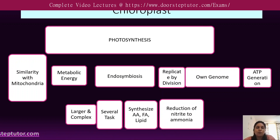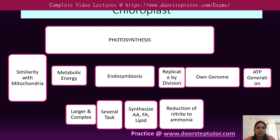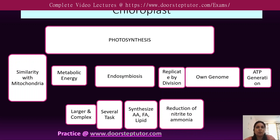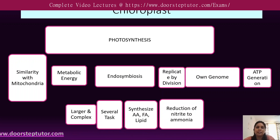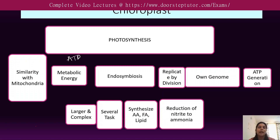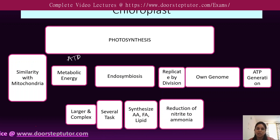Photosynthesis is the synthesis of carbon compounds with the help of light. This chloroplast is a complex and much larger cell organelle, and it shows similarity with the mitochondria of the eukaryotic animal cell. Both are responsible for generation of metabolic energy, that is ATP. The mitochondria is also known as the powerhouse of the cell. In this way, the chloroplast shows similarity with the mitochondria.